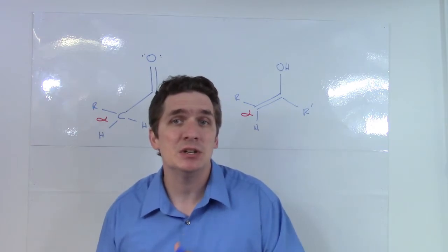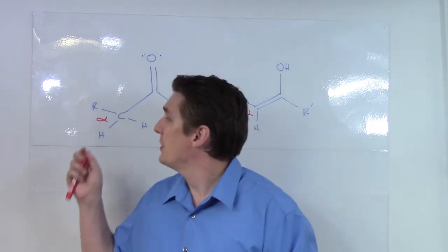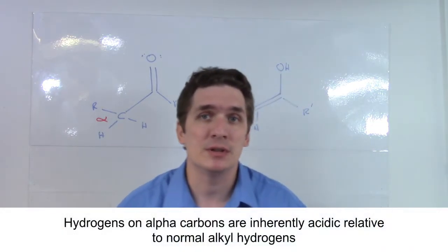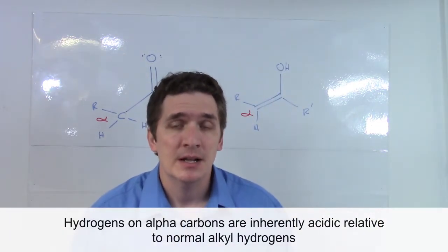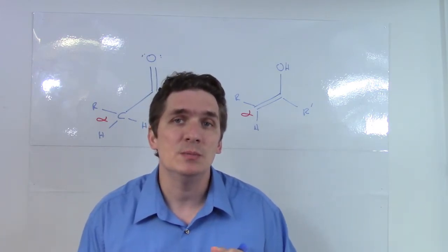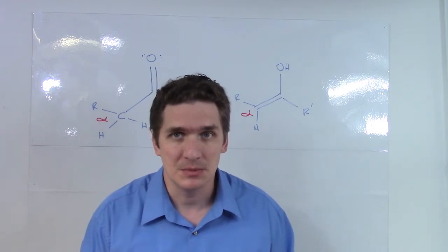The second point is that because we can undergo tautomerization, that effectively makes these hydrogens more acidic than they would normally be for a CH2 or CH group. If you're on a carbon adjacent to a carbonyl, those particular hydrogens are more acidic than they would be if they were not sitting next to the carbonyl.